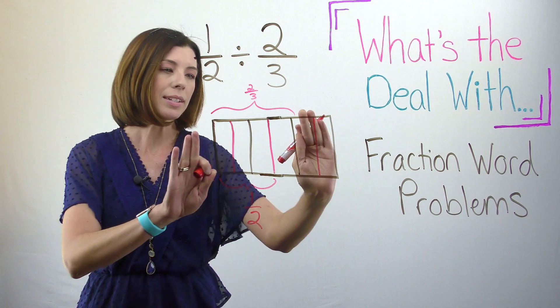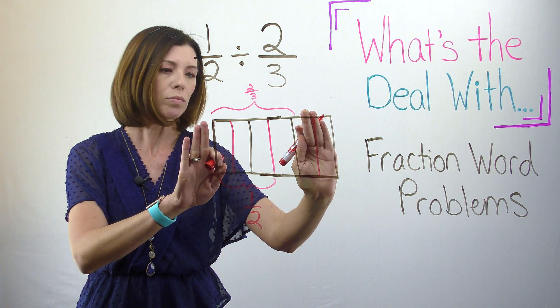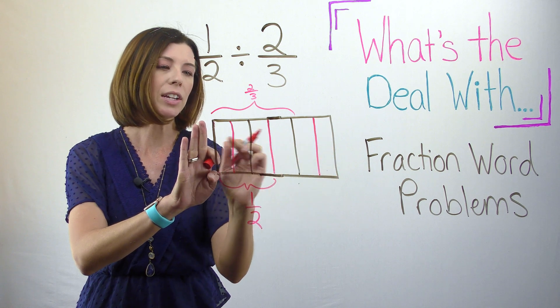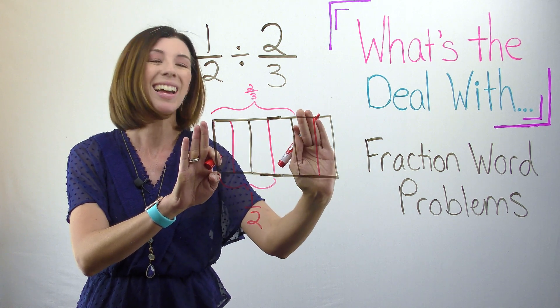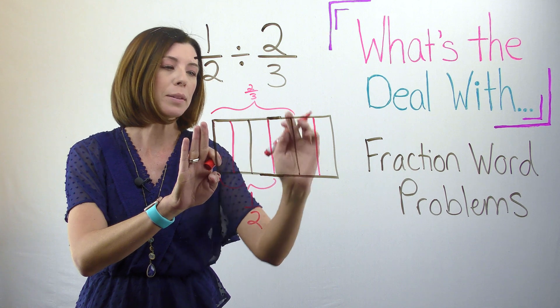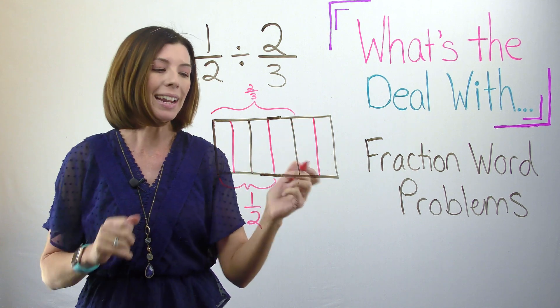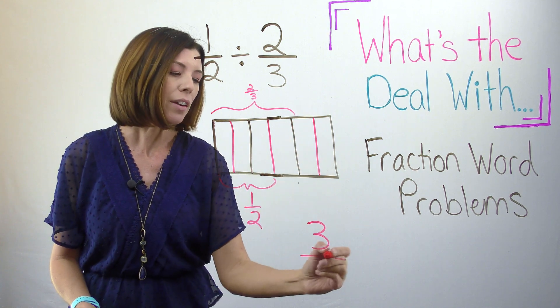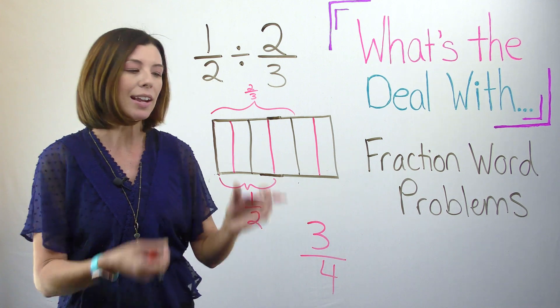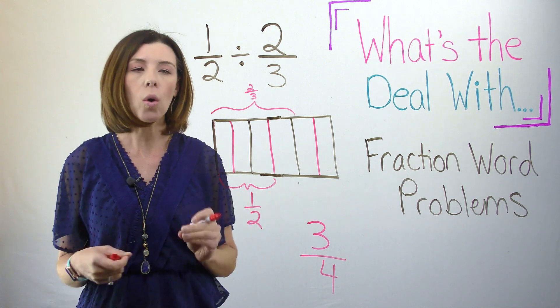Okay. So that means that I have this part right here, right? So I know that what I have is one, two, three parts of the whole recipe of fourths. So my answer would be three fourths. I am able to make three fourths of the whole recipe.